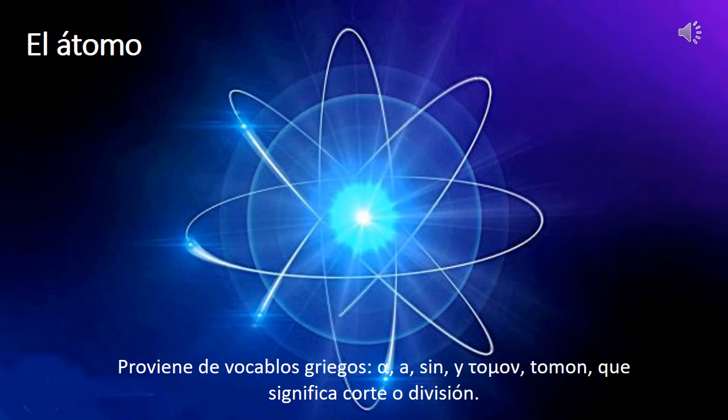El átomo proviene de los vocablos griegos 'a', que significa sin, y 'tomo', que significa corte o división; es decir, que es algo sin cortar o algo que no se puede dividir. El átomo es la unidad básica de toda la materia, la estructura que define a todos los elementos con propiedades químicas bien definidas.